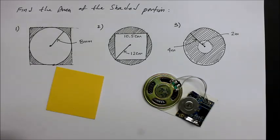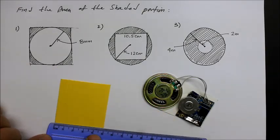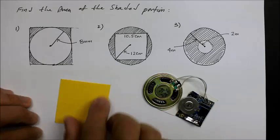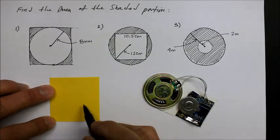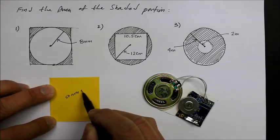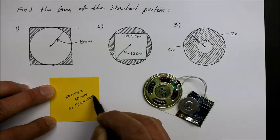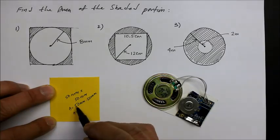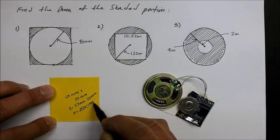Here's a piece of paper. The dimensions are about 5 centimeters, or 50 millimeters by 50 millimeters. So the total area of this square, assuming 90-degree corners, is 50 millimeters times 50 millimeters — length times width — which is 2,500 millimeters squared.